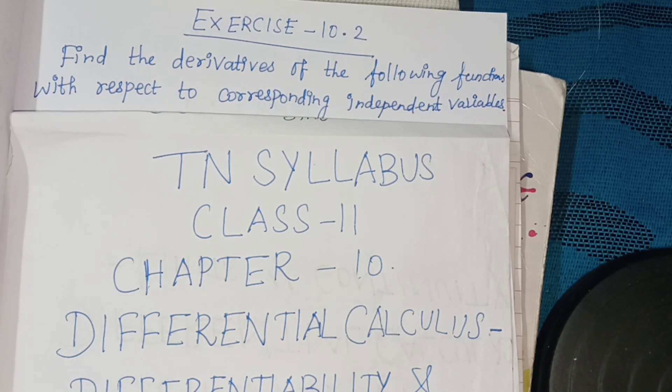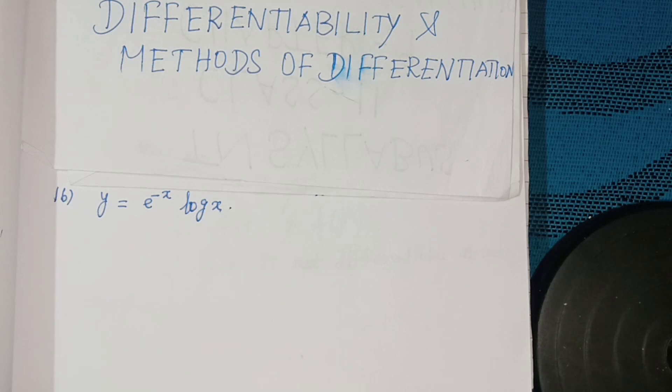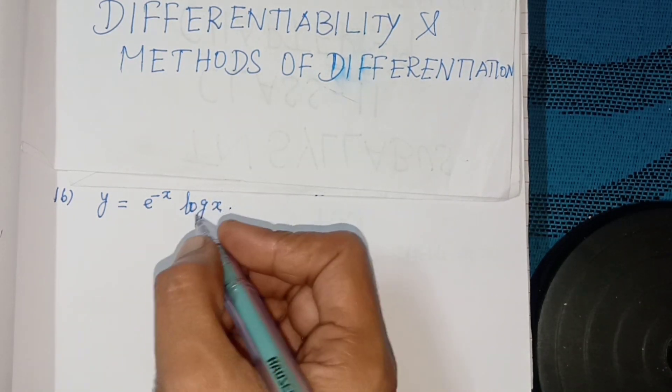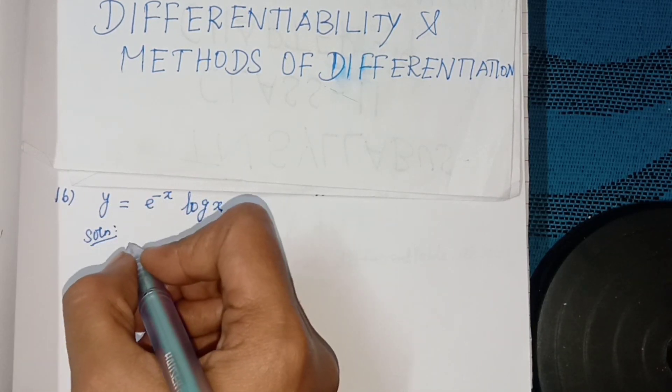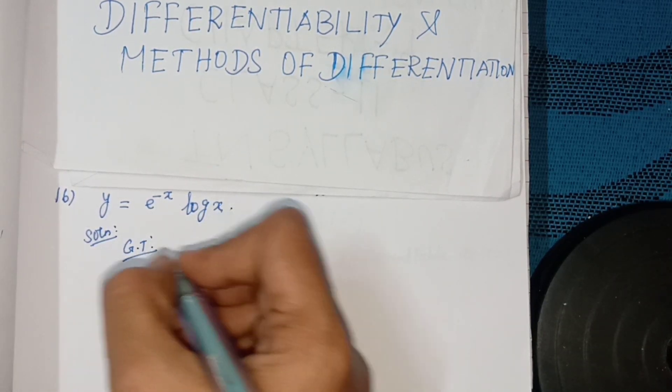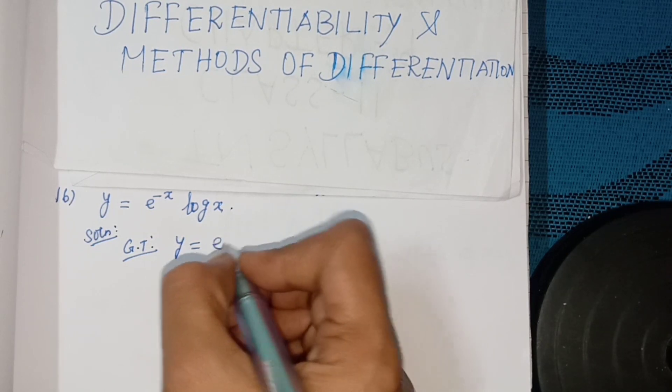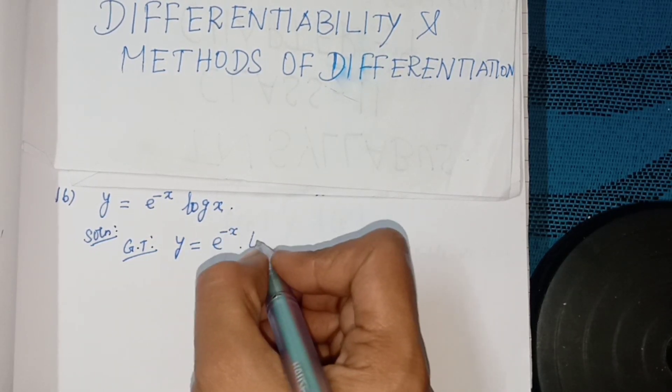Problem 16: y equal to e power minus x into log x. Solution: given that y equal to e power minus x into log x.